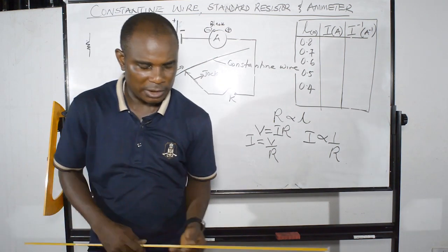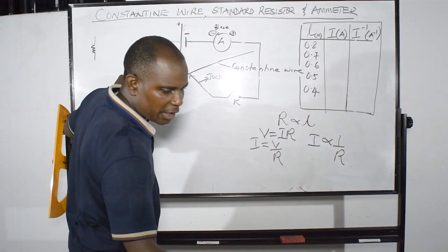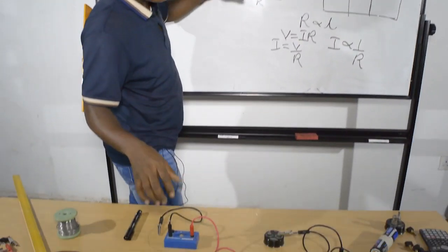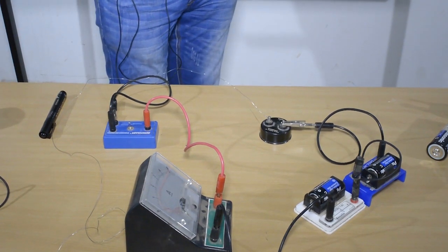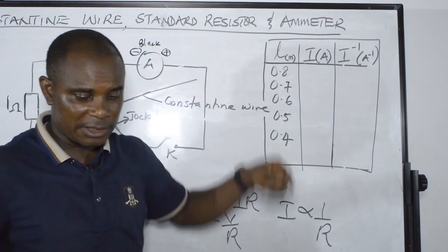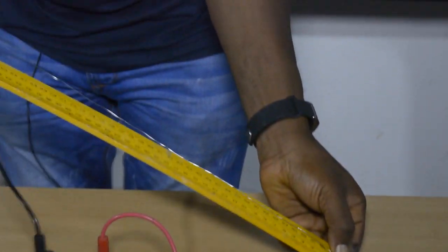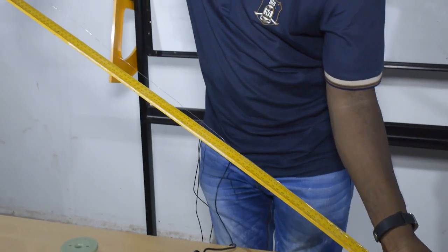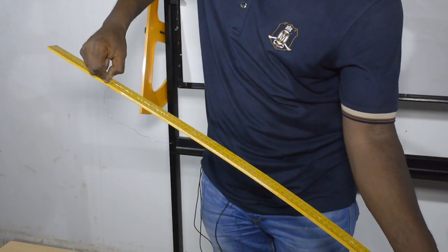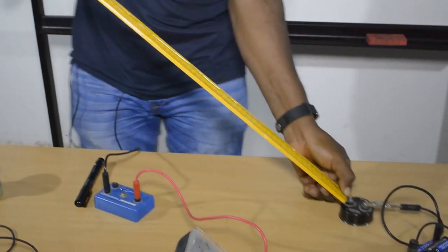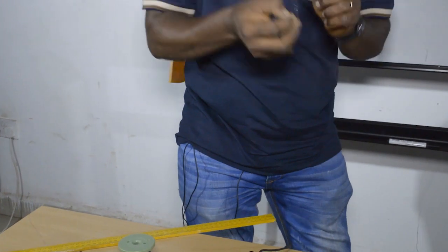Let's complete the circuit. We have the key, the resistance, the cell, the ammeter, and the constantan wire. I'm going to look at 80 centimeters first — that's 0.8 meters. I make sure it's on the zero line and move it until I get to 80. I've measured it here on the meter rule. From that 80 cm mark I bend the wire so I don't miss the position.